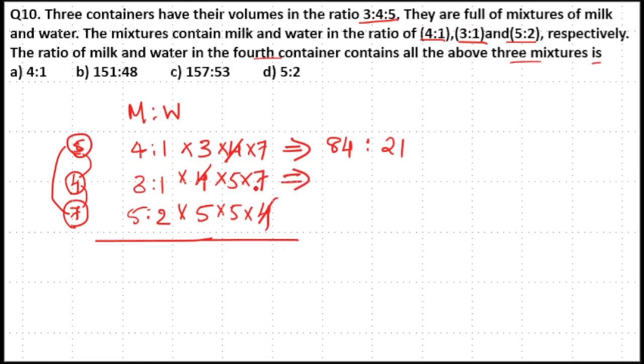The second ratio will become 7×5=35, so 35×3=105 for milk and 35×1=35 for water. The third ratio will become 5×5=25, so 25×5=125 for milk and 25×2=50 for water.